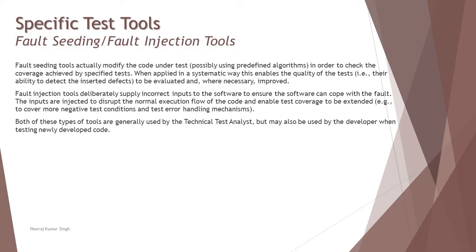Additionally, fault injection tools deliberately supply incorrect inputs to the software to ensure it can cope with the fault. The inputs are injected to disrupt the normal execution flow of code and enable test coverage to be extended. Both these types of tools are generally used by technical test analysts but may also be used by a developer when testing newly developed code.